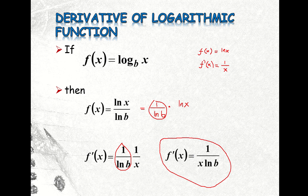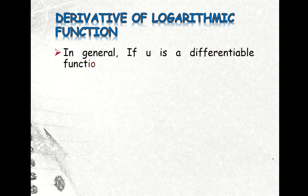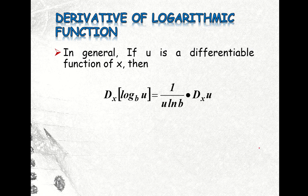In general, if U is a differentiable function of X, then the derivative of the logarithm of U with base B with respect to X is equal to 1 divided by U times LN of B, times the derivative of U with respect to X.